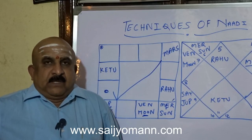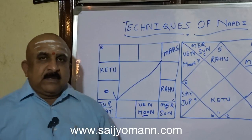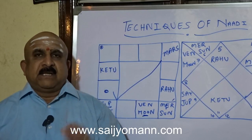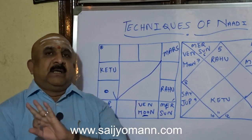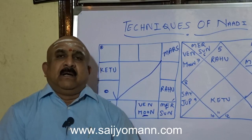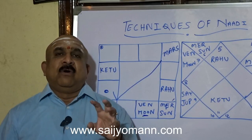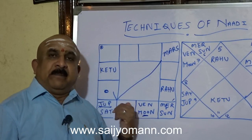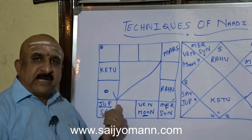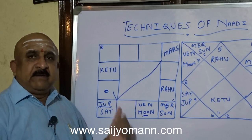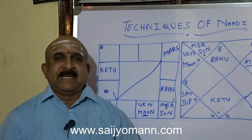Now Dhanastanam. If a malefic — Sun, Saturn, Mars — is there in the Dhanastanam, it will definitely give more expenditure to the native. The money flow will be there according to Venus, but because in the second house when Mars, Sun, Saturn, even Rahu and Ketu are placed, they will spoil the second house — the income part of it, the Dhanastanam part.